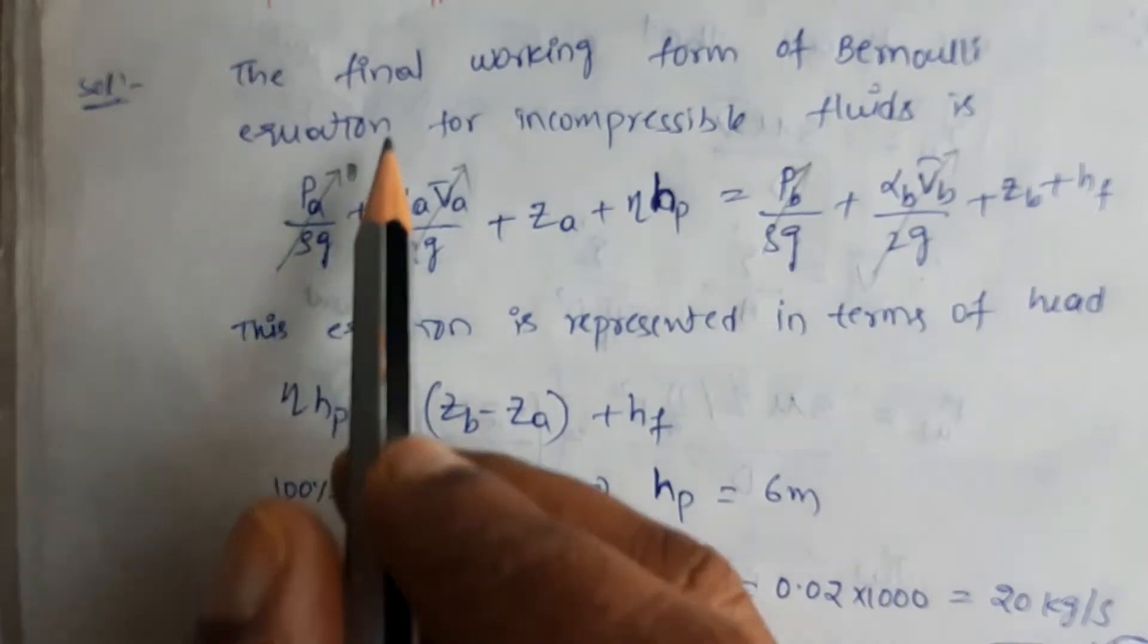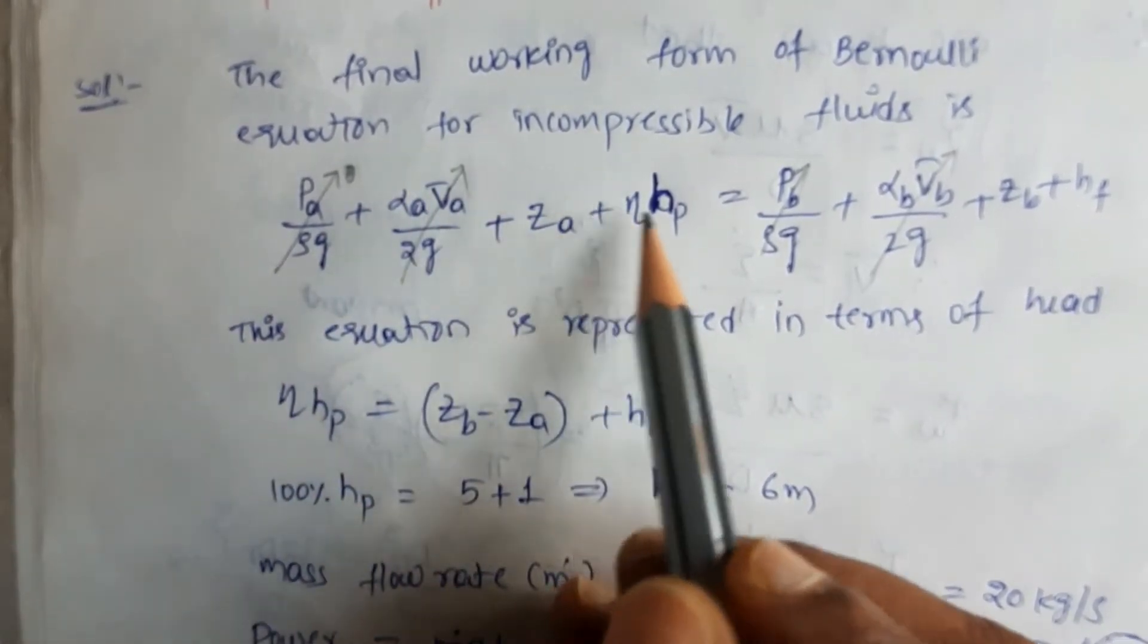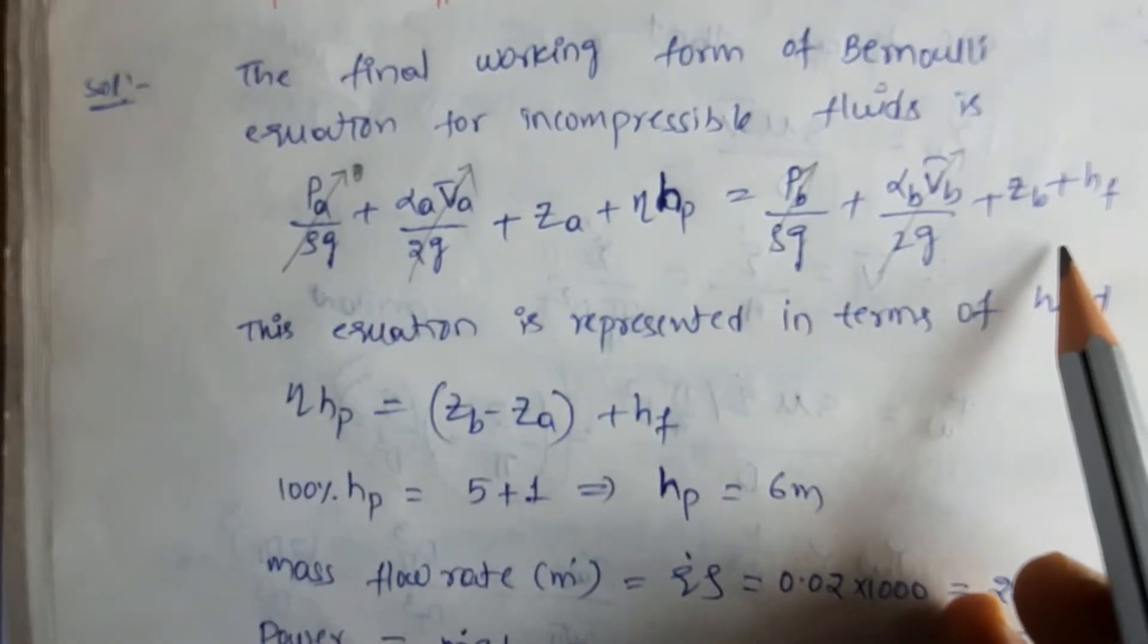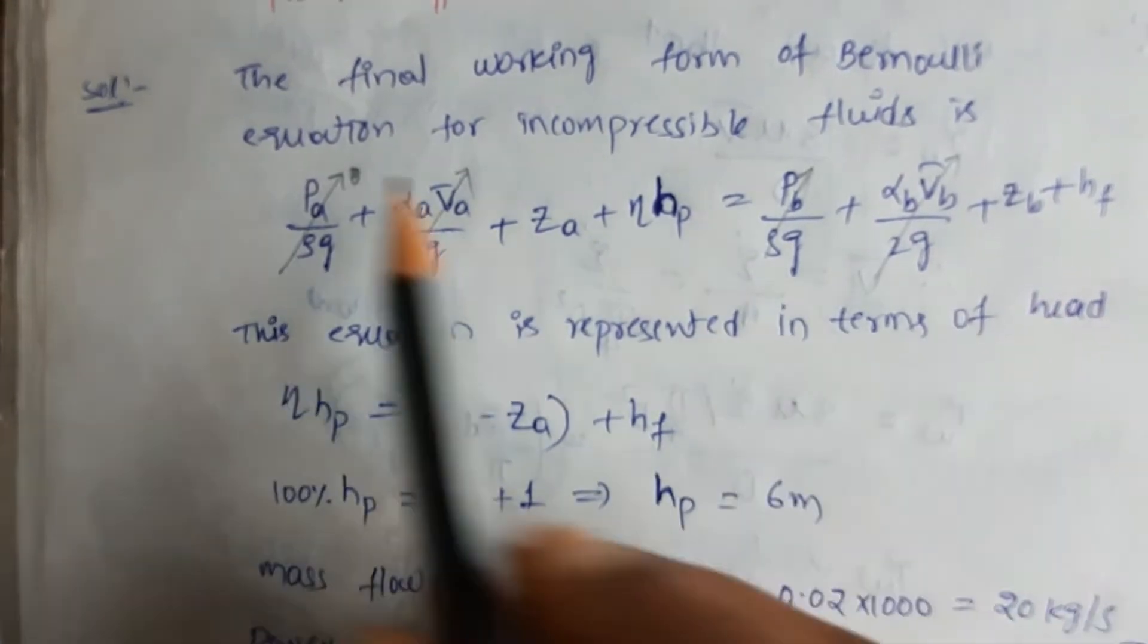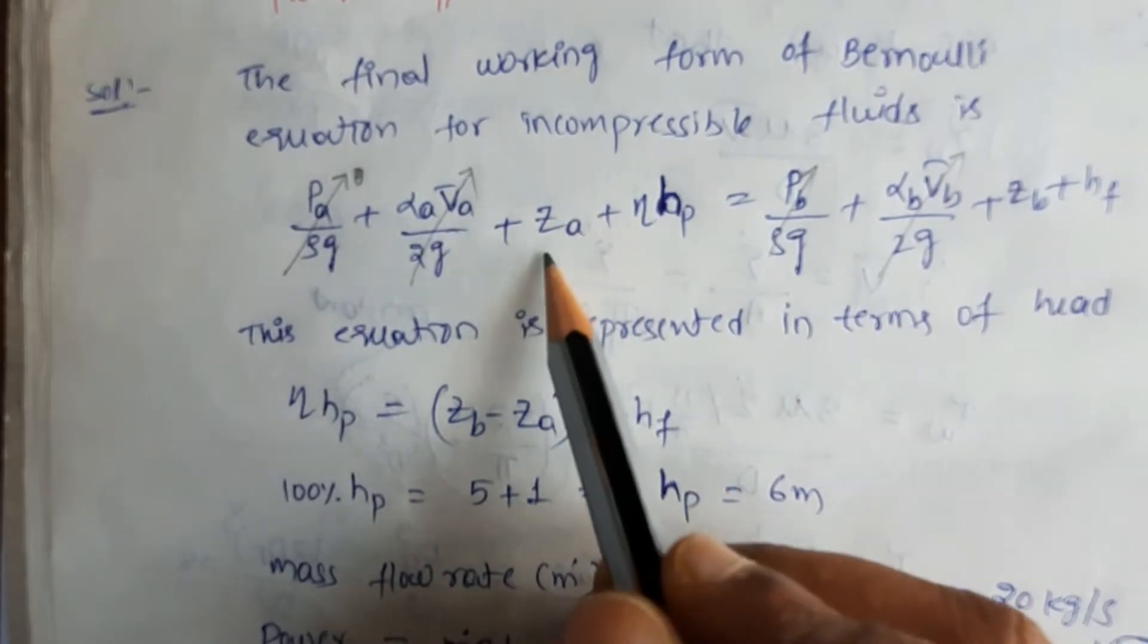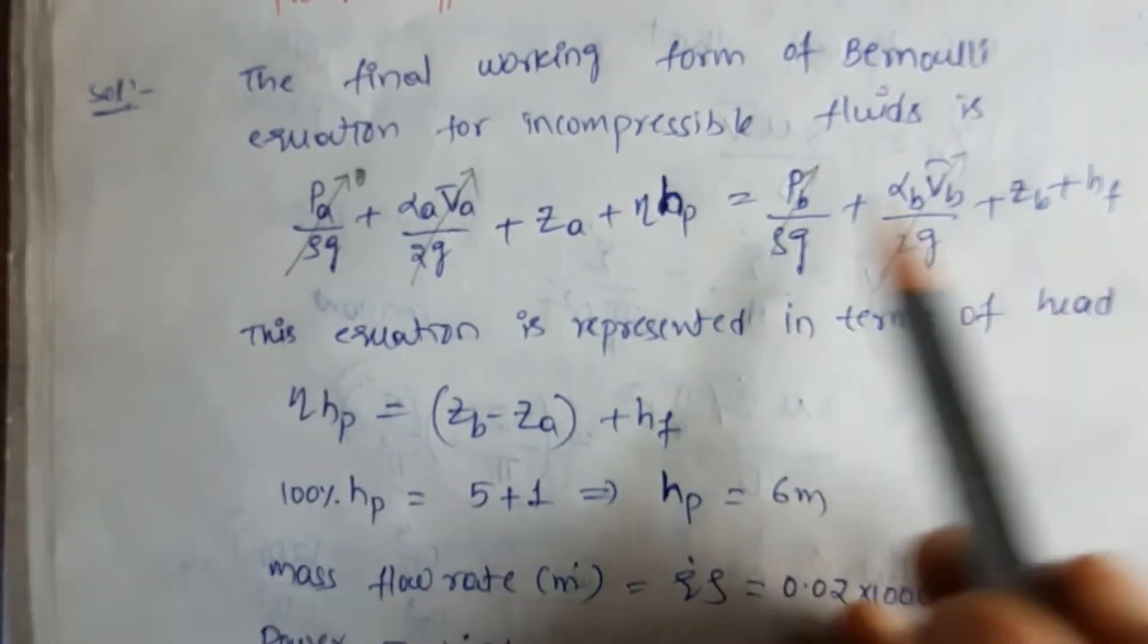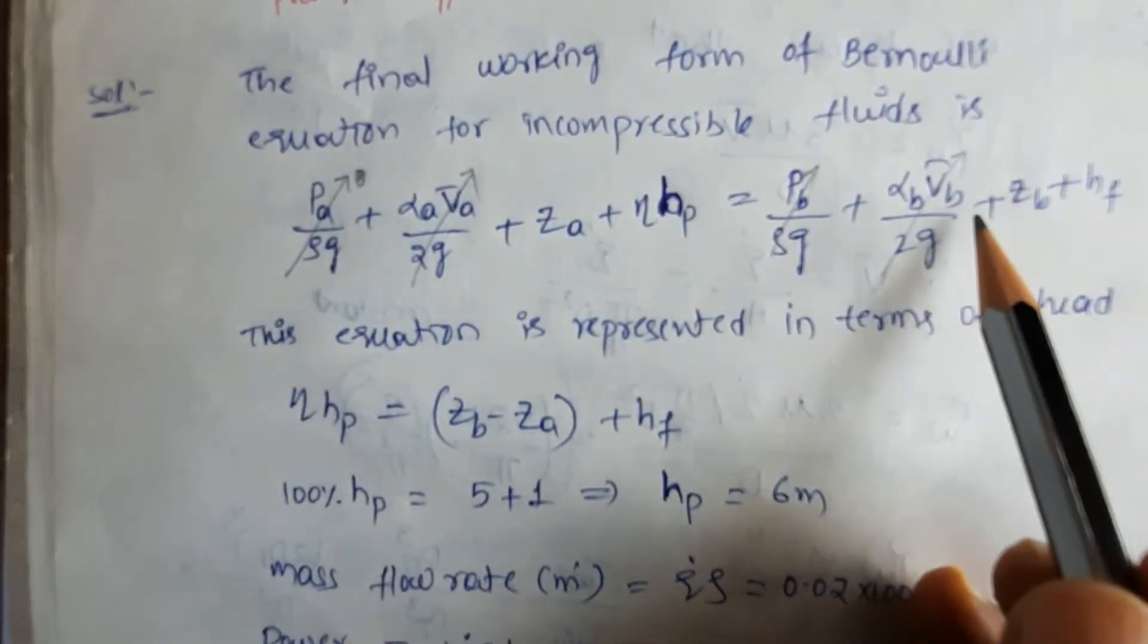The final working form of Bernoulli's equation after incorporating pump work and friction is this equation. This equation represents the pressure head, kinetic energy head, potential energy head, pump head, and friction head. These terms are represented at two different locations.